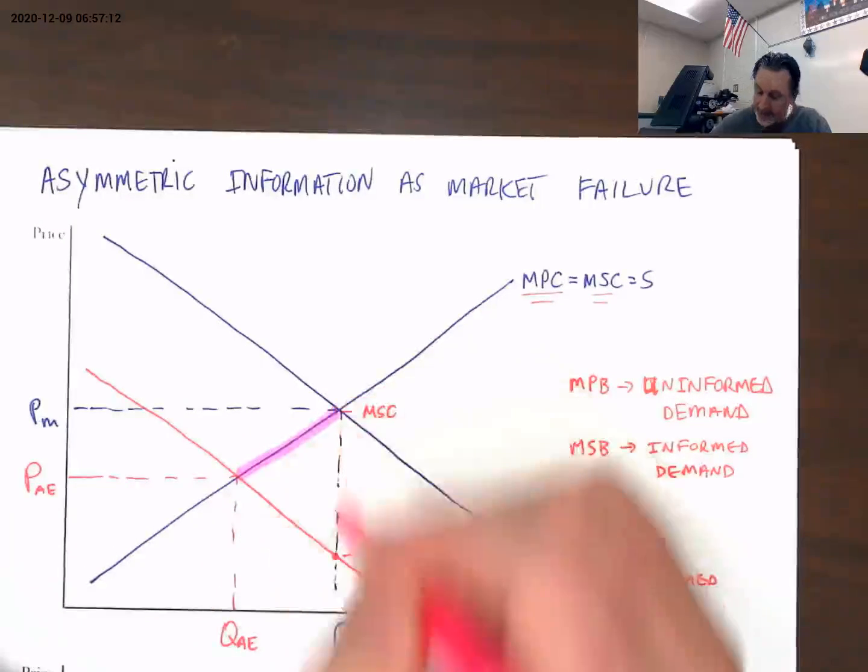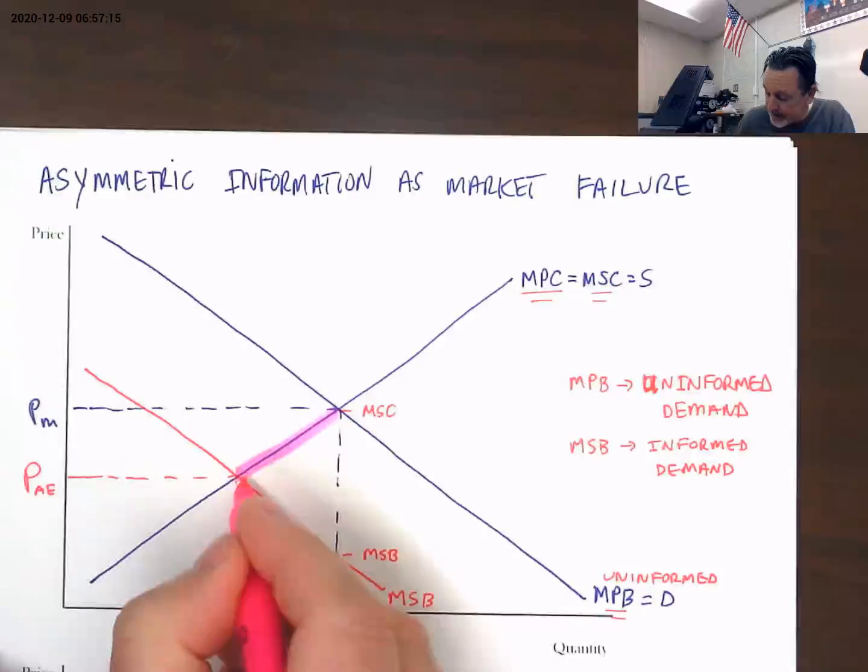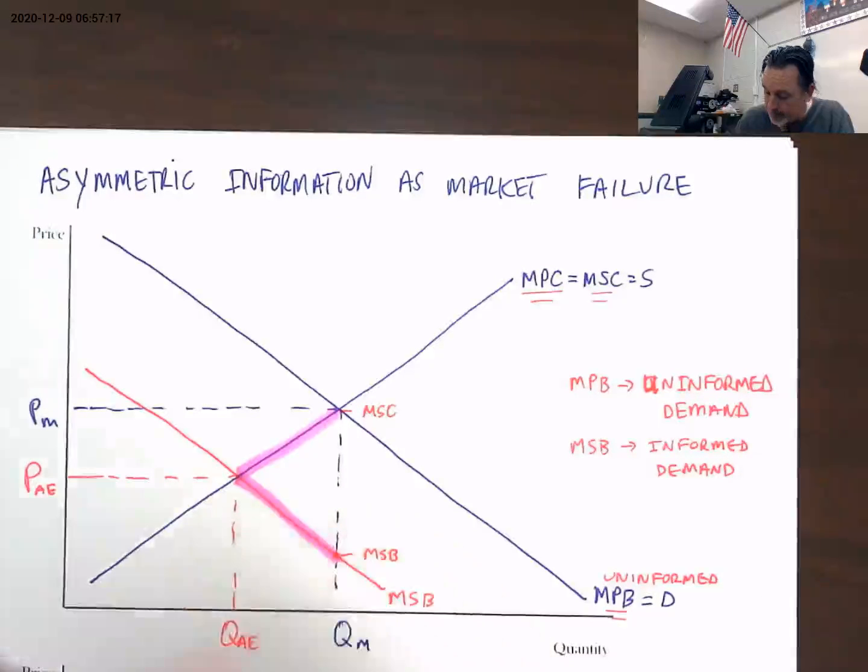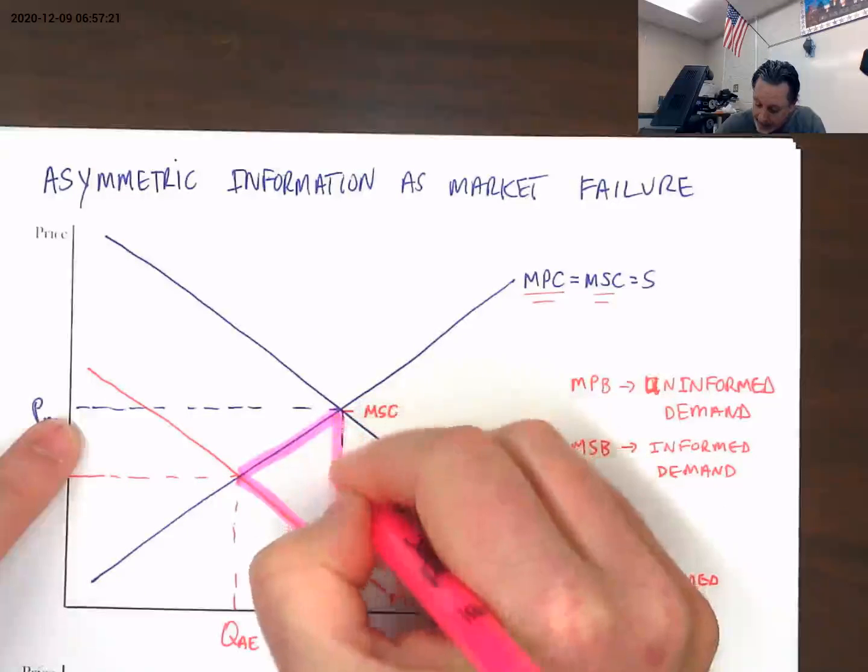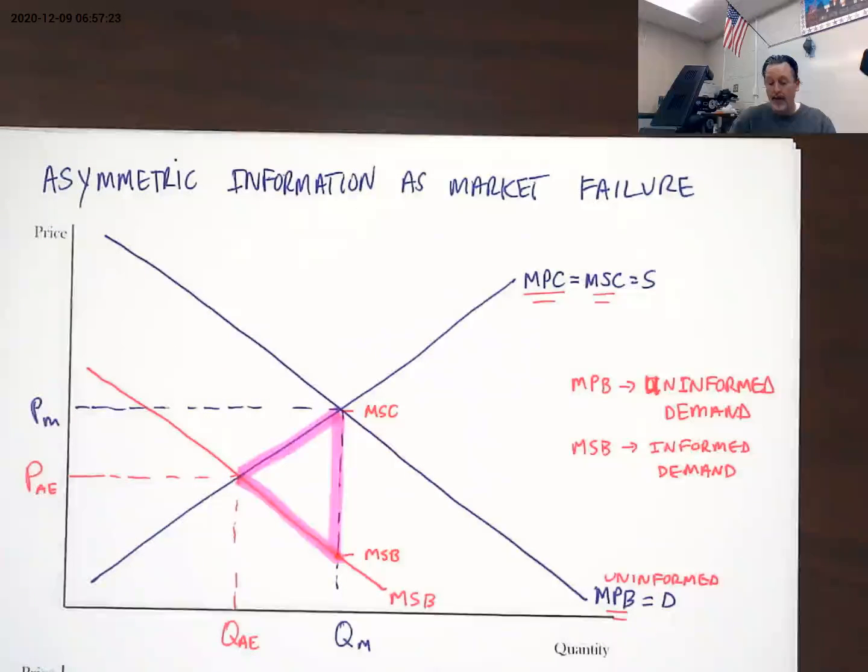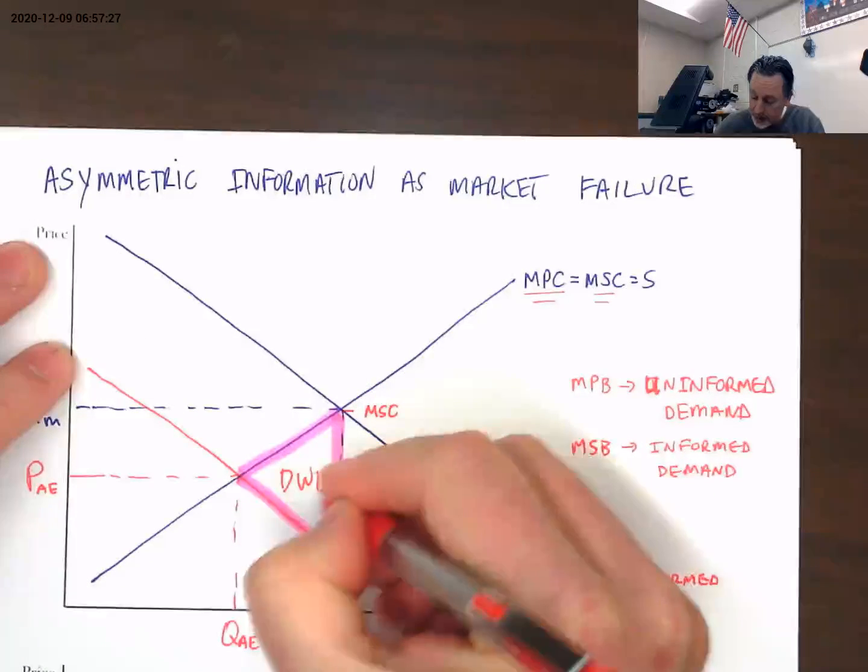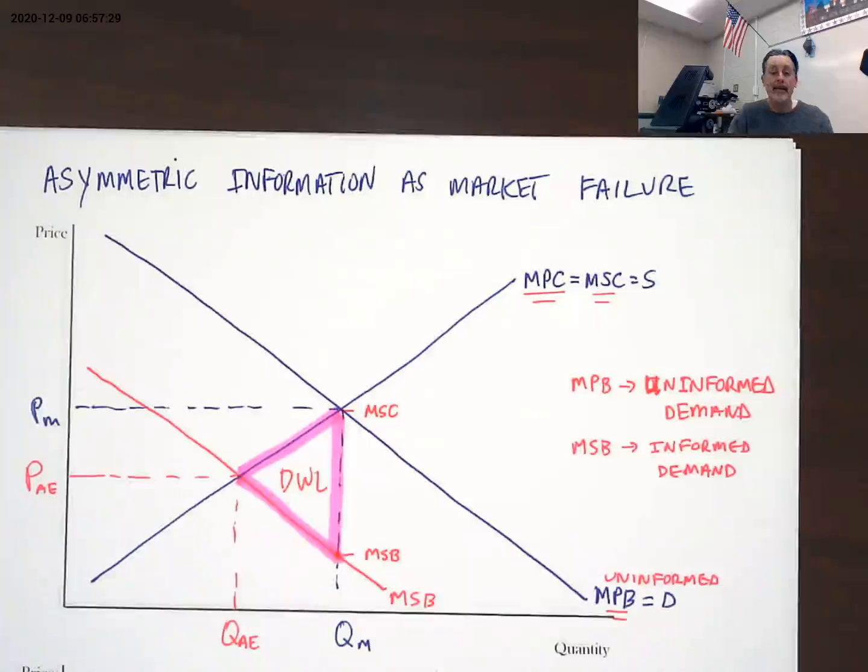From society's perspective, we find too many suppliers in the marketplace servicing too many demanders. We get this area of deadweight loss to society from this over-consumption due to incorrect information.